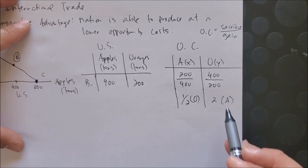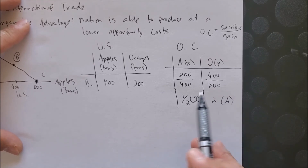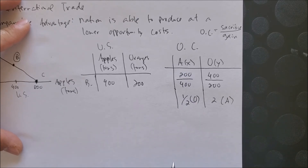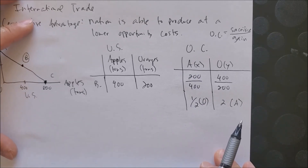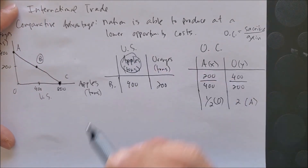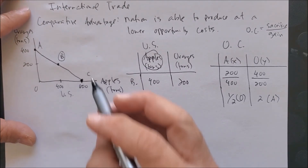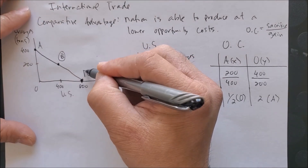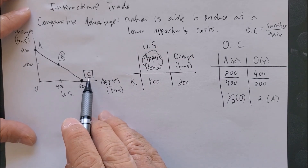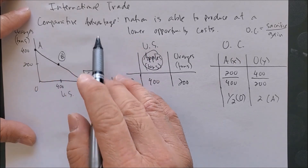It seems that producing oranges has a higher opportunity cost than producing apples, so the United States would be better off producing apples — and apples only. We would say that point C might be the better point in terms of producing at a comparative advantage.